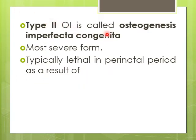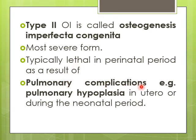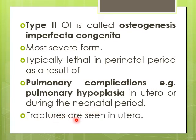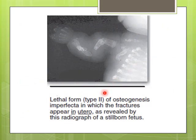OI type 2, also called osteogenesis imperfecta congenita, is the most severe form and is mostly life-threatening. It can cause pulmonary hypoplasia — incomplete development of the lungs with abnormal lung size — detectable in utero or in newborns. Fractures can also be seen in utero, and multiple fractures are observable in the developing baby before birth.